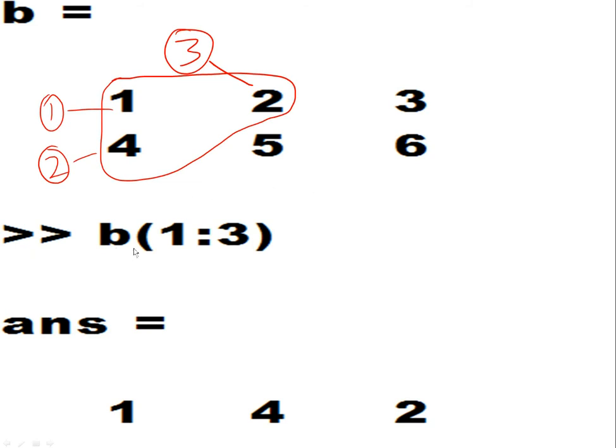Now, for b, what are the starting, what are the first three, 1 through 3, the first three elements in this array, this matrix? It's 1, 2, and 3. So I got 1, 4, and 2.